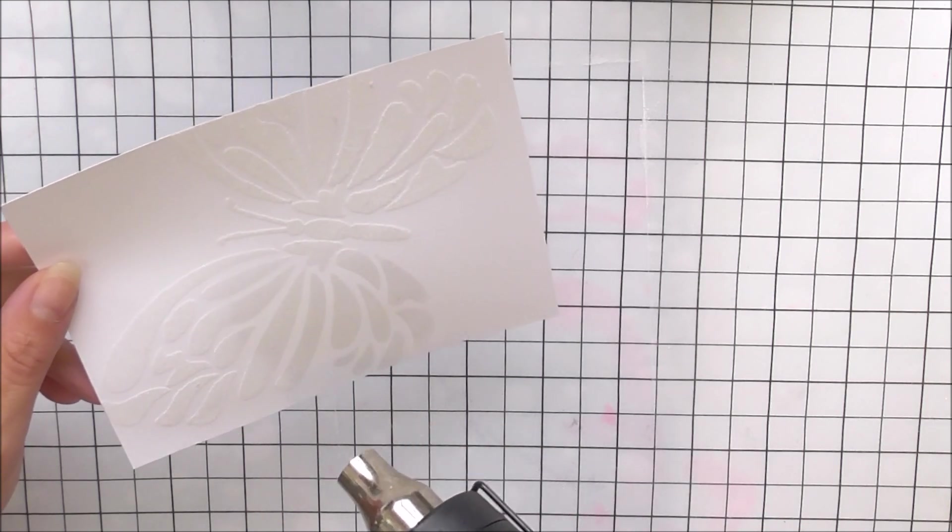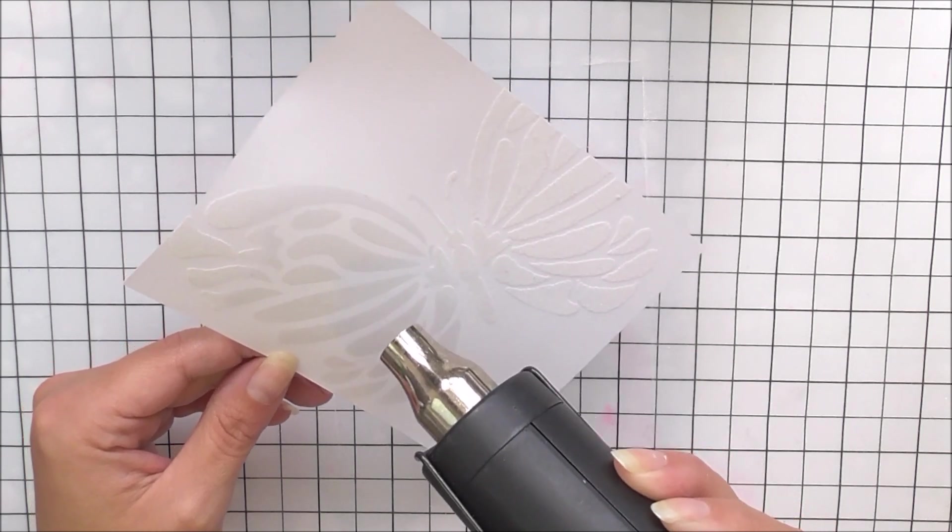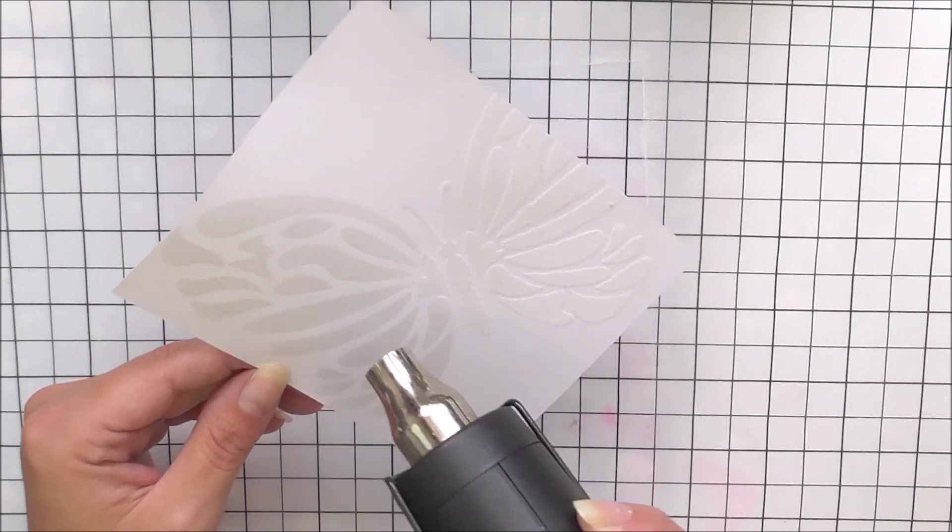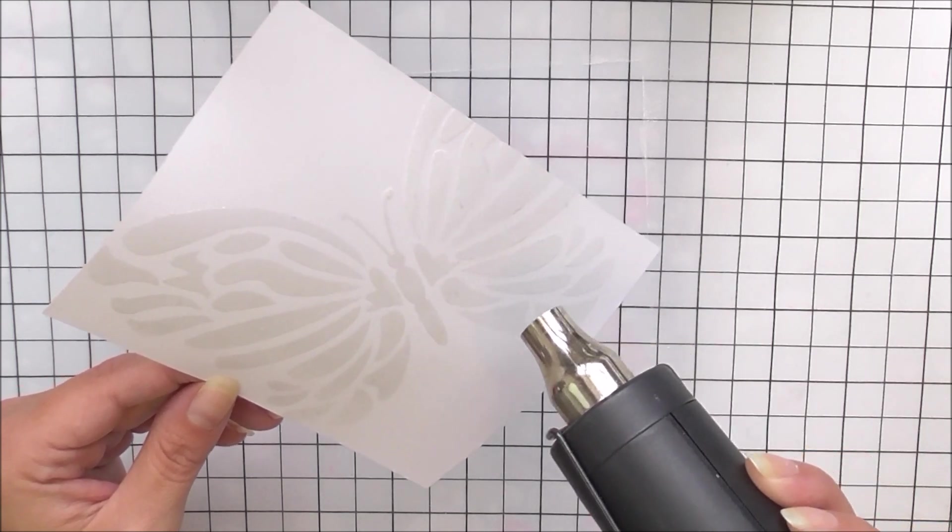Also, when you heat set, it is recommended that you do let your heat tool just heat up for a little bit before you add it to the place you want to heat emboss, so it's not going to warp your cardstock too much.